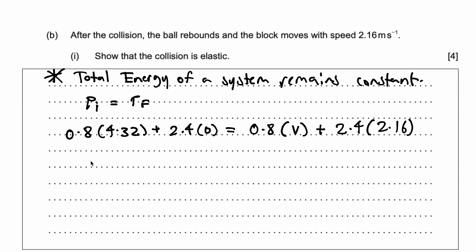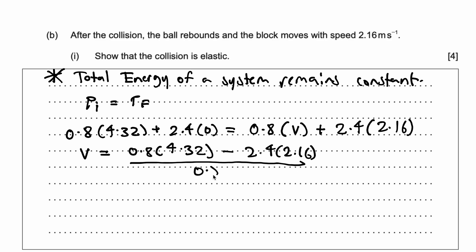If I solve for V: V equals 0.8 times 4.32, minus 2.4 times 2.16, all over 0.8. Putting this on the calculator: 0.8 times 4.32, minus 2.4 times 2.16, over 0.8. I get the velocity comes out to be negative 2.16, but taking the absolute value, that's just 2.16. So the ball rebounds with the same speed as the block — the block moves at 2.16 m/s forwards, and the ball moves at 2.16 m/s in the reverse direction. We've proven the rebound speed of the ball is 2.16 m/s.